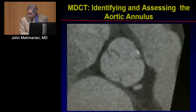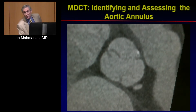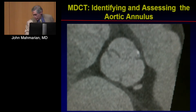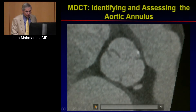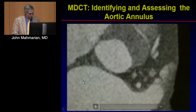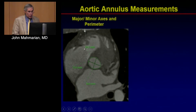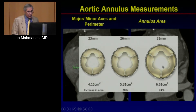When evaluating the annulus, we go perpendicular to the annulus, identify it, and make our measurements. We obtain minor and major axis measurements, perimeter, and area around the valve for sizing purposes. These dimensions correspond to the different available valve sizes. Paravalvular regurgitation is seen across trials, and if you undersize the valve you get significant regurgitation, whereas oversizing between 5–15% yields none to trivial regurgitation.